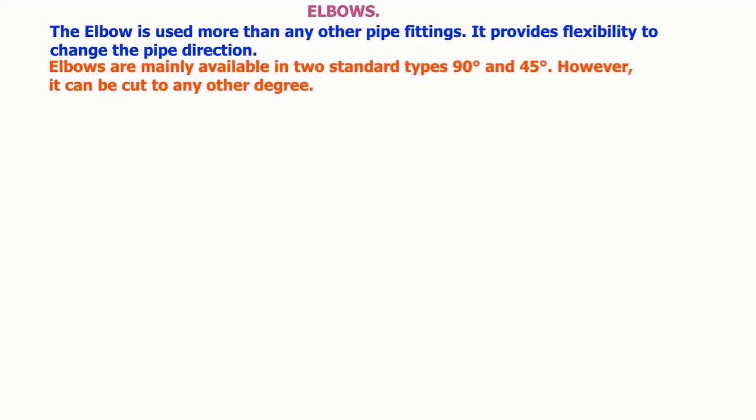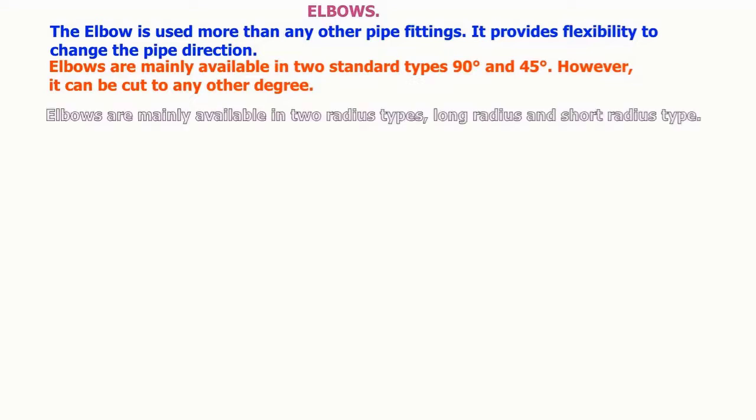It provides flexibility to change the pipe direction. Elbows are mainly available in two standard types: 90 degrees and 45 degrees. However, it can be cut to any other degree. Elbows are mainly available in two radius types: long radius and short radius type.